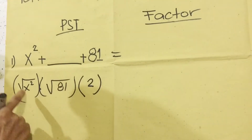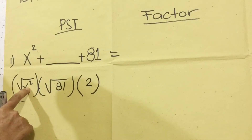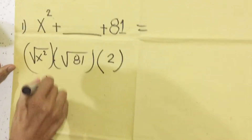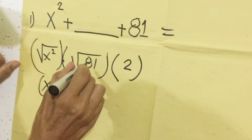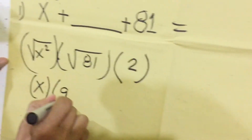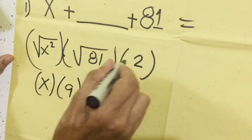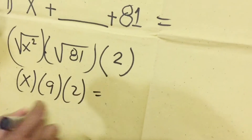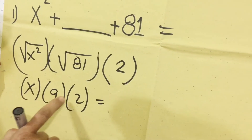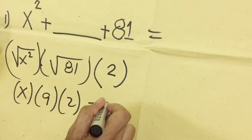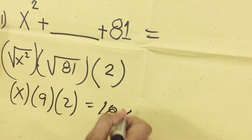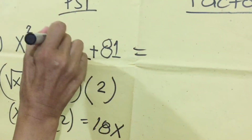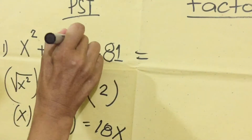The square root of x squared is x, the square root of 81 is 9, and this times 2. So our answer is x times 9 times 2 equals 18x. Therefore, the middle term is 18x.